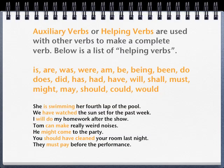Auxiliary verbs or helping verbs are used with other verbs to make a complete verb. The helping verbs are: is, are, was, were, am, be, being, been, do, does, did, has, had, have, will, shall, must, might, may, should, could, and would. For example, she is swimming her fourth lap of the pool — is swimming is the total verb, and is is the helping verb.